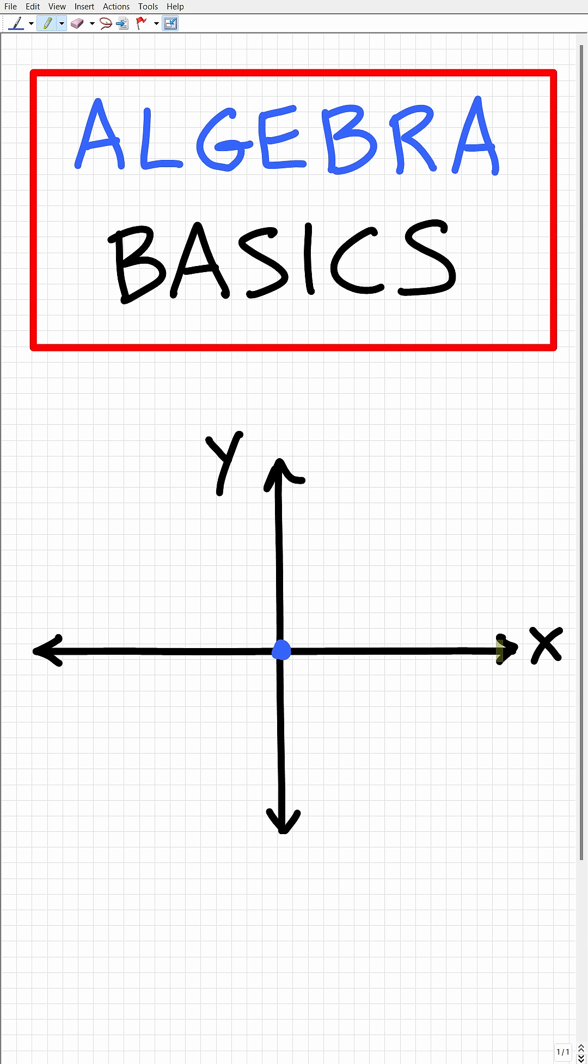have two lines here. This is called the x-axis and this line is called the y-axis. The center is called the origin, which is the point (0,0). This is zero on the x-axis and also zero on the y-axis.